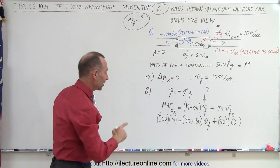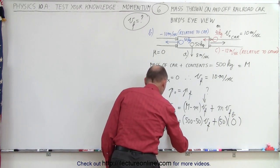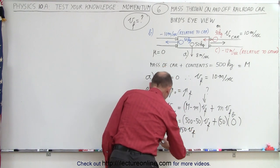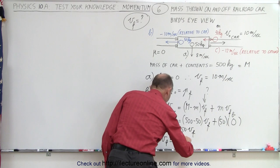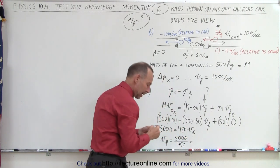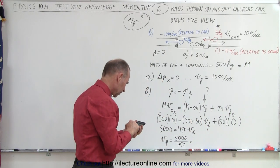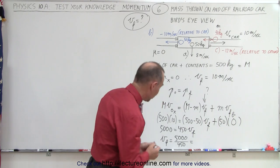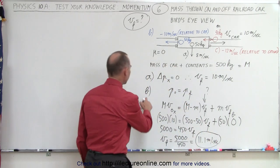Now we're ready to find V final. This gives us 5,000 equals 450 times V final, so V final equals 5,000 divided by 450, which is 11.1 meters per second. That's the answer for part B.